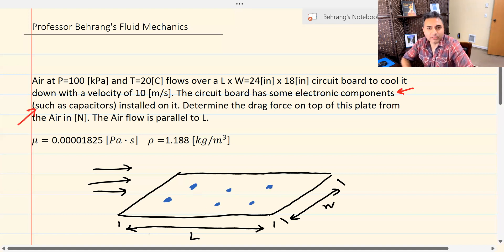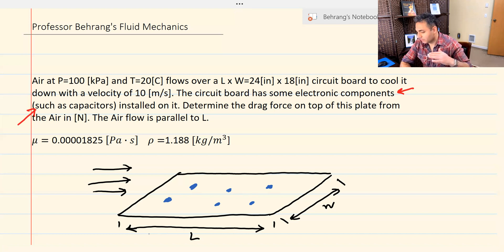Even if this circuit board is modeled as a smooth surface, because we have resistors and capacitors, they are going to trip the boundary layer. Once they trip the boundary layer, the flow becomes entirely turbulent from the very beginning, no matter what Reynolds number is. It doesn't matter if Reynolds number turns out to be more than five times 10 to the fifth or less than five times 10 to the fifth.